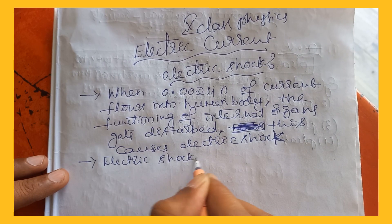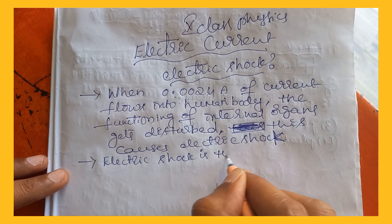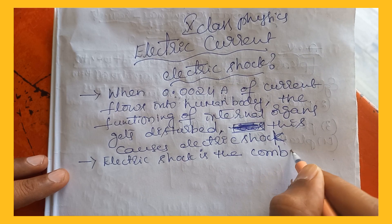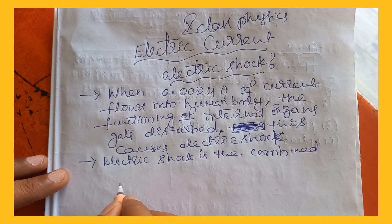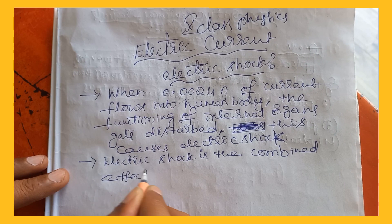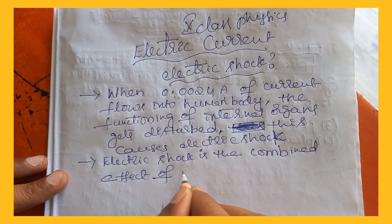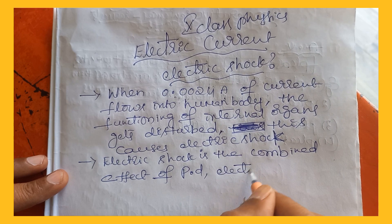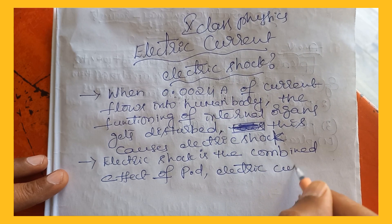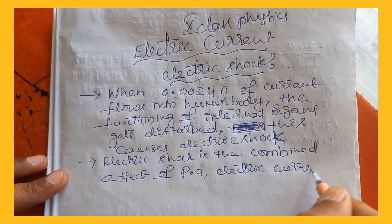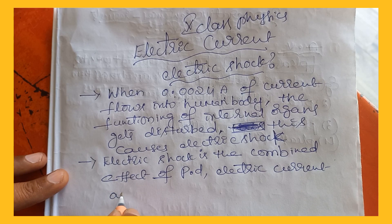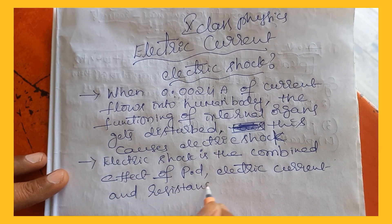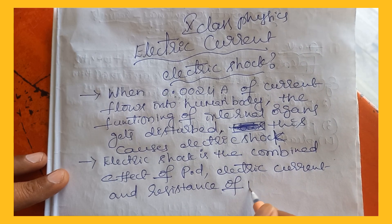Electric shock is the combined effect of potential difference, current, and resistance — that is, the electric resistance of the human body.